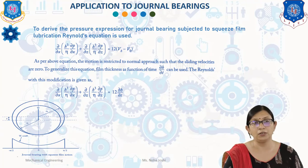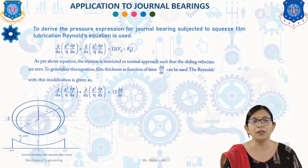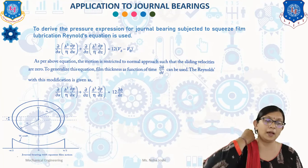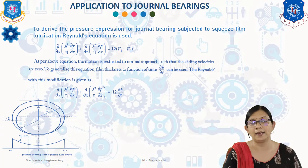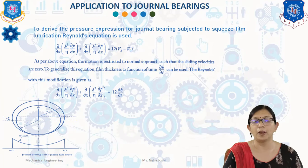As per the above equation, the motion is restricted to the normal approach such that the sliding velocity is absent. To generalize this equation, film thickness as a function of time, ∂h/∂t, can be used. The Reynolds equation with this modification is: (∂/∂x)(h³/η · ∂p/∂x) + (∂/∂z)(h³/η · ∂p/∂z) = 12 · ∂h/∂t.